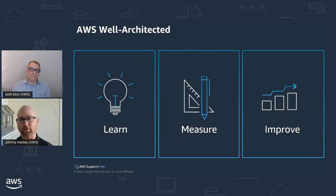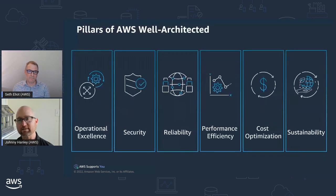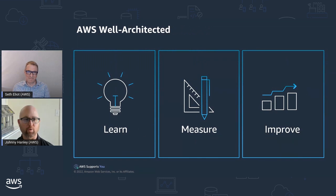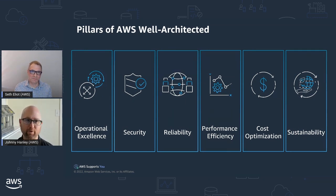Well-Architected is a framework that AWS has put together based on best practices and experience from customers over the years. We've learned what are the best practices in the cloud, and we want to take that learning and be able to measure your architecture against it — find out what things you're doing really well and areas that you could improve. Then the next step is to take that improvement and work through it in your architecture. The Well-Architected framework is a flywheel — it's continuous improvement.